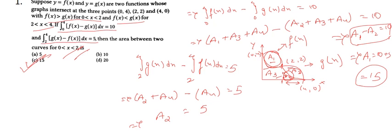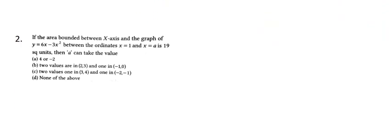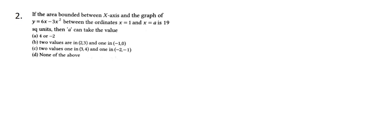Now let's move on to our second question. It says: find the area bounded between the x-axis and the graph of y = 6x - 3x² between the ordinates x = 1 and x = a, which is 19 square units. We need to find which value a can take. So we write I = integral of (6x - 3x²) dx.